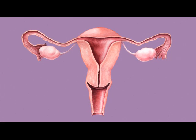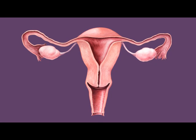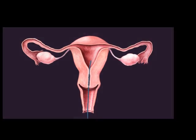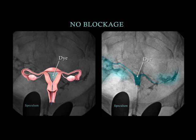A non-surgical outpatient procedure called hysterosalpingography can be used to check for a blockage in the fallopian tubes. A catheter is placed through the vagina and into the endometrial cavity. Next, a dye visible under x-ray is injected into the endometrial cavity. If there is no blockage, the x-ray should show the dye flowing out of both fallopian tubes and into the surrounding space, the abdominal cavity.